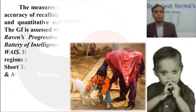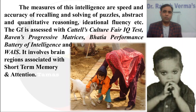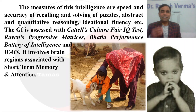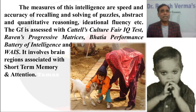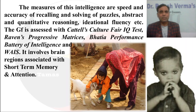The measures of fluid intelligence are speed and accuracy of recalling and solving puzzles, abstract and quantitative reasoning, and ideational fluency — meaning how fluently ideas are generated in your brain. How fast and accurately you solve puzzles, how accurately you reason abstractly or quantitatively — all these are indicators or measures of GF, fluid intelligence.